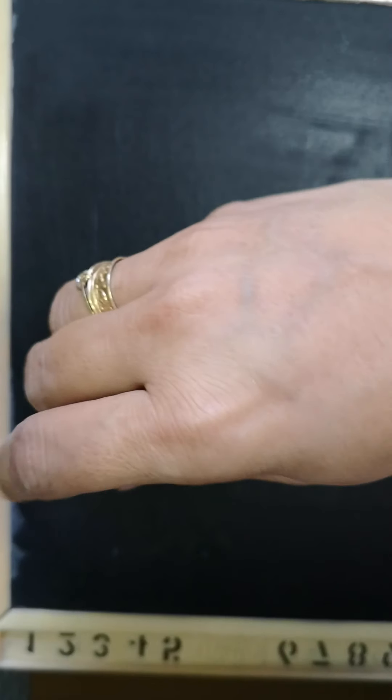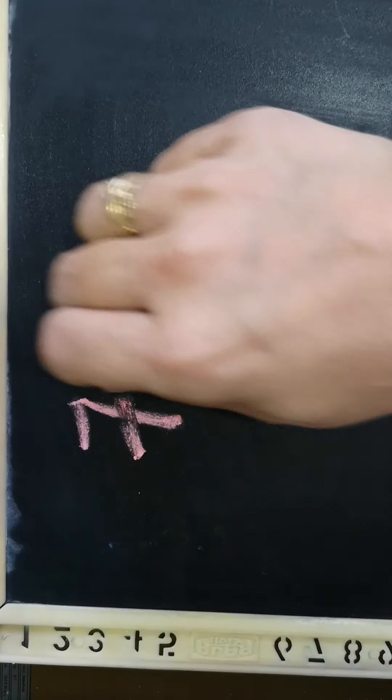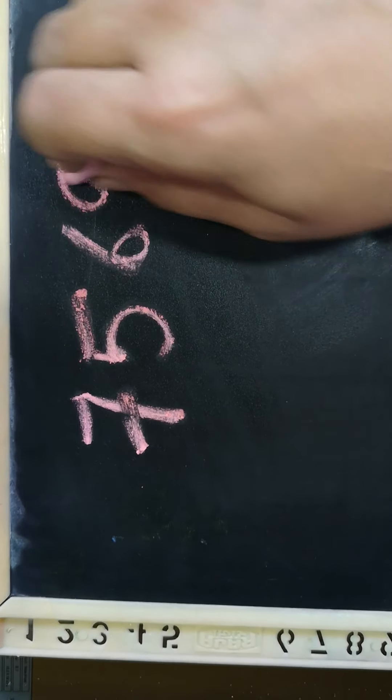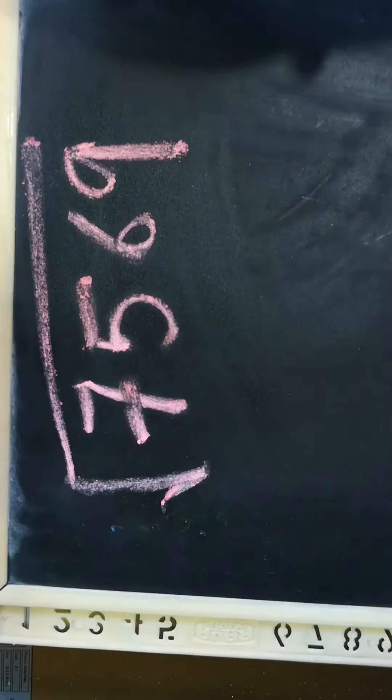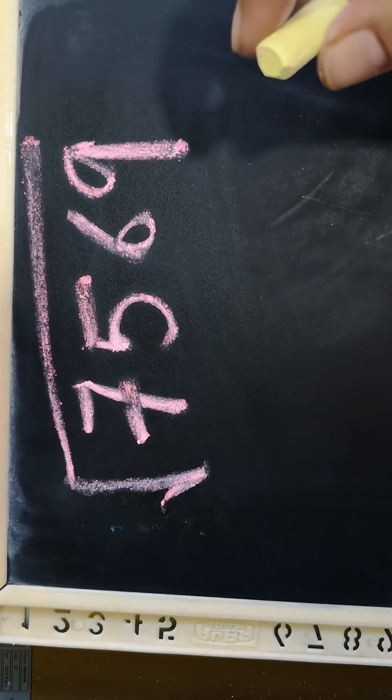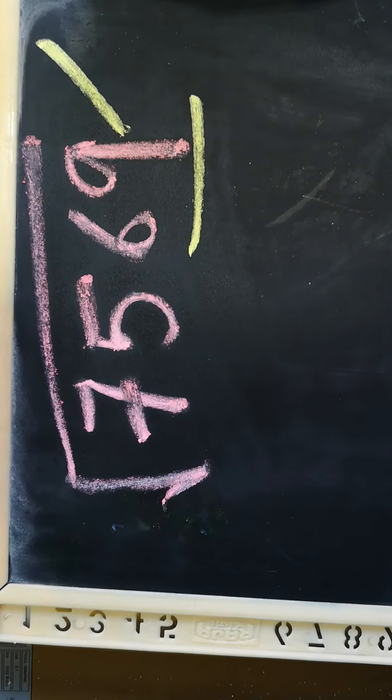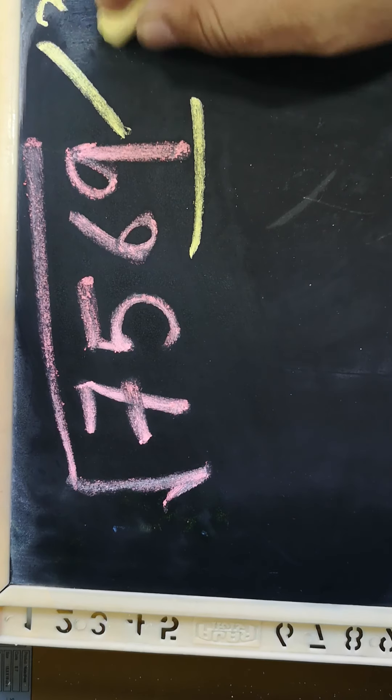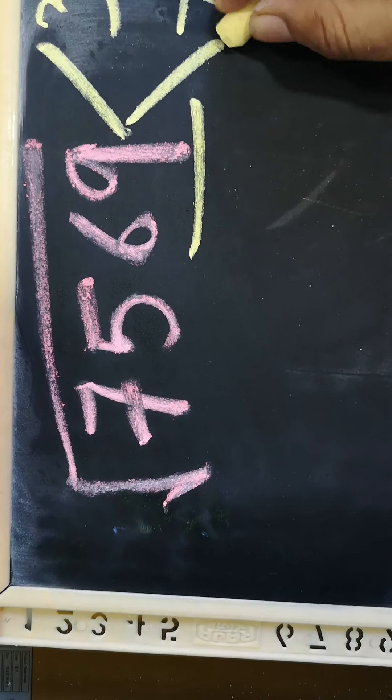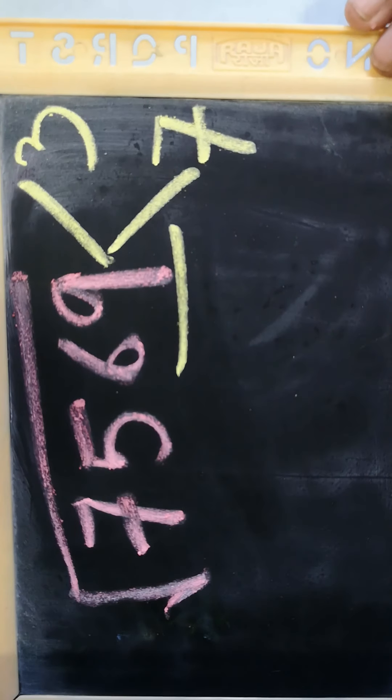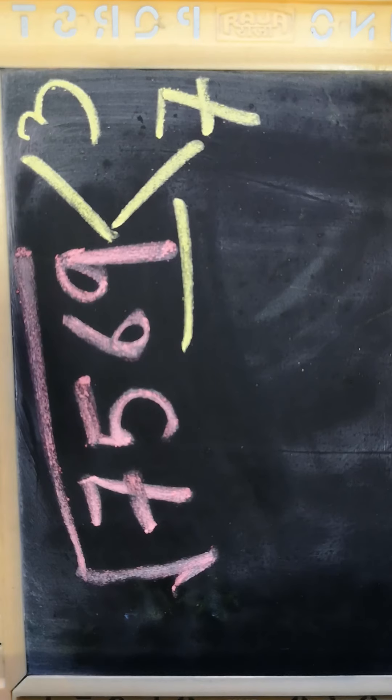Let us take one more example, 7569. So now 7569, the last digit 9 says it has to be either 3 or 7. The last digit answer should be either 3 or 7.